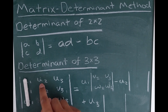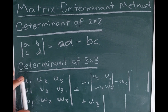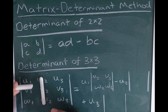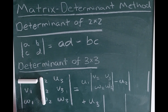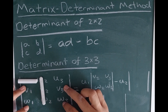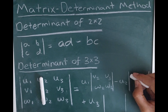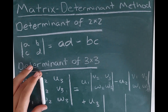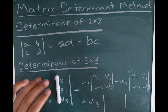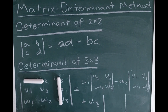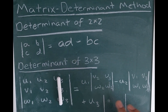The next term in the expansion always carries a minus sign — it's minus U2. I eliminate the column and row with U2, and what I'm left with is V1, V3, W1, and W3. I fill in that 2x2 determinant. Then for the final element in the first row, U3, I eliminate that column and row, and what I'm left with is V1, V2, W1, and W2, which goes into the third term of my expansion.